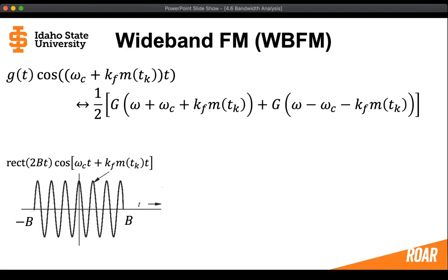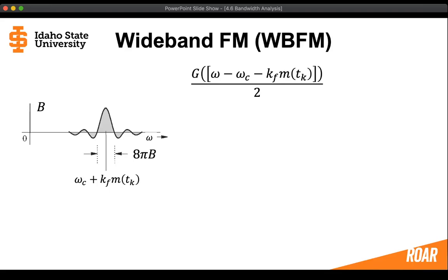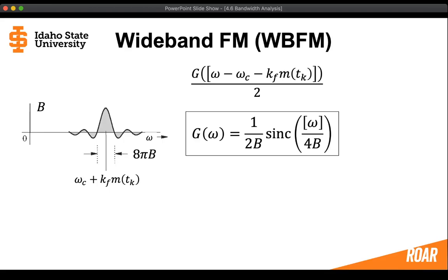If we multiply a cosine wave that lasts for just a duration of 1 over 2b, we're going to get two different pulses in the frequency domain. Each pulse is going to have a width of 8π b. Looking at just the positive frequency pulse, we have our sinc function, and it's going to shift in frequency because we multiplied it in time by a cosine wave at a constant frequency. So it shifts to the carrier frequency plus kf multiplied by our message value at our staircase interval.